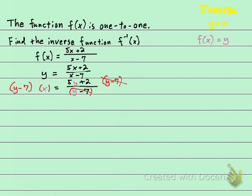Let's see where we are now. We are at y minus 7 times x equals 5y plus 2.